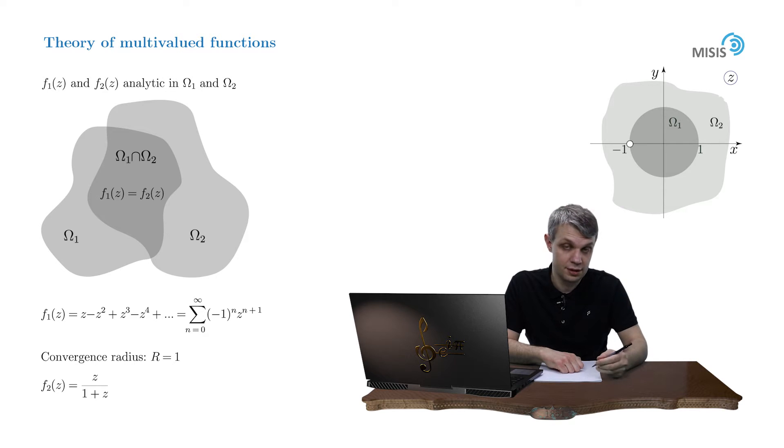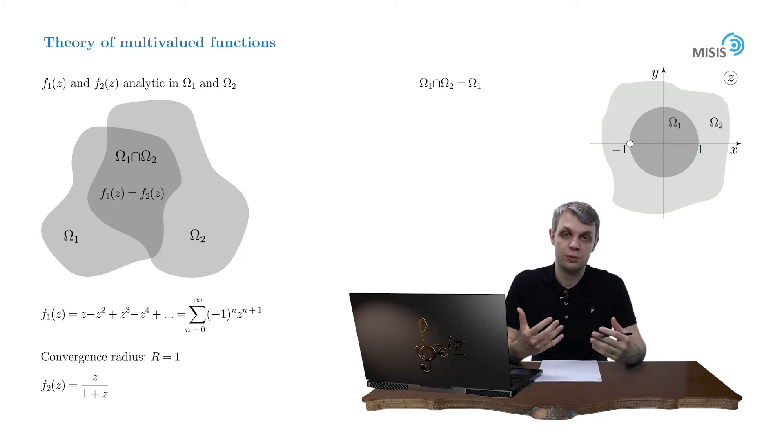Let's call this second domain of analyticity Ω₂. The intersection of these two domains Ω₁ and Ω₂ is simply equal to Ω₁. And the function f₂ coincides with the function f₁ inside this unit circle, because f₁ is a convergent Taylor series of the function f₂ inside this unit disk.